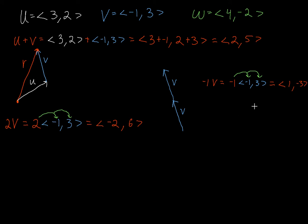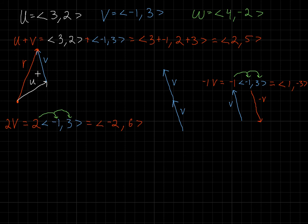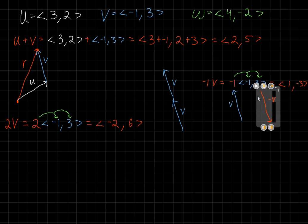That doesn't look very remarkable at first, but let's turn back on the grid lines and see what actually happened. Our original vector v goes 1 to the left and 3 up. Negative v goes 1 to the right and 3 down. When you multiply by negative 1, what you're actually doing is flipping or reflecting that vector — it's exactly the same vector except we've switched the head and the tail.